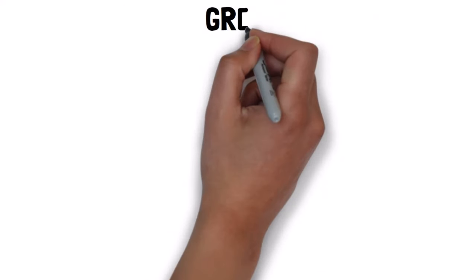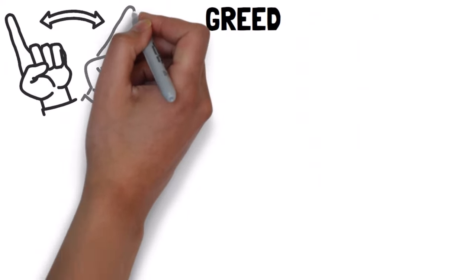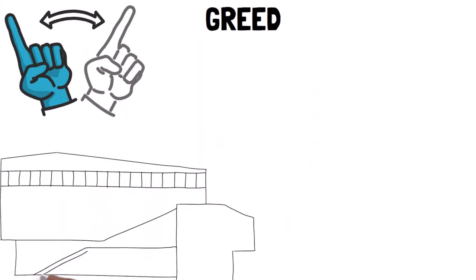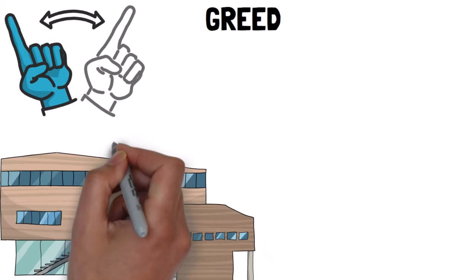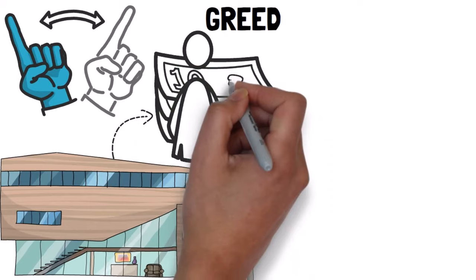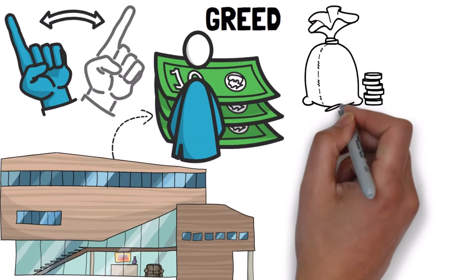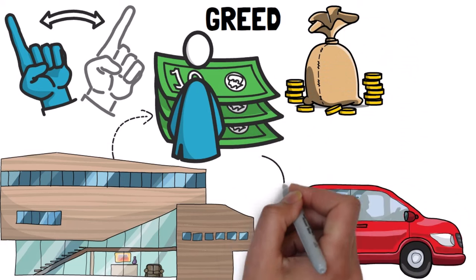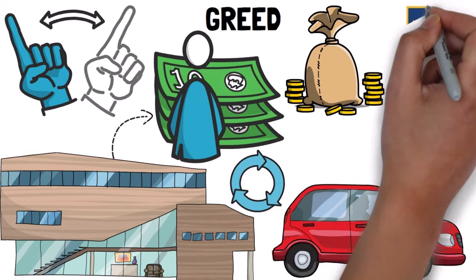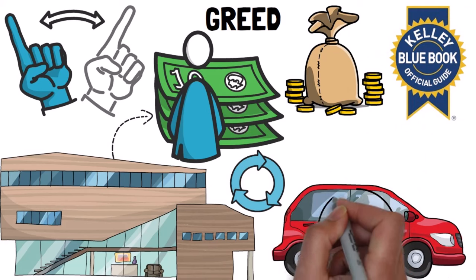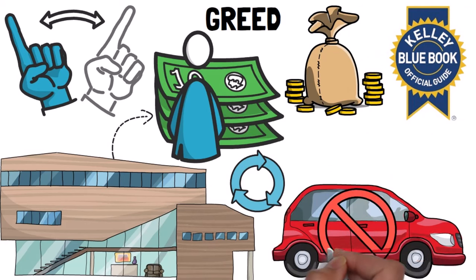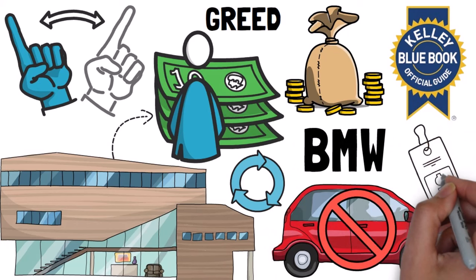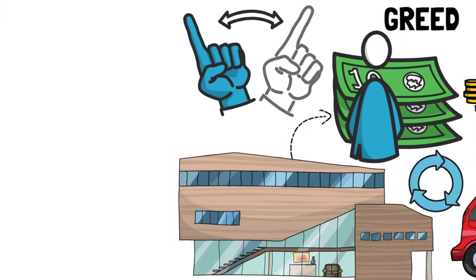Finally, the fourth point is about greed. This isn't too surprising because companies usually focus on what's best for their shareholders. Automakers have realised they can charge more by making fewer cars, and they're doing just that. An article by K Blue Book explained that car companies are deliberately not meeting demand. BMW, for example, said they'll keep making fewer cars to maintain their prices.